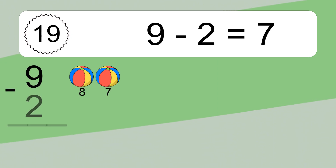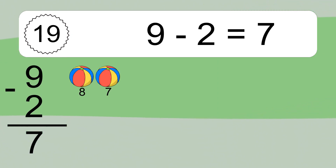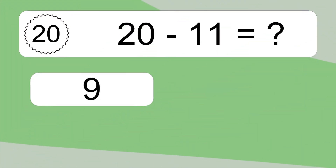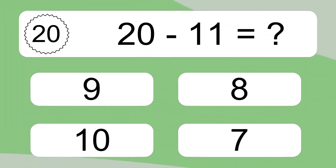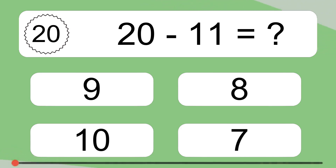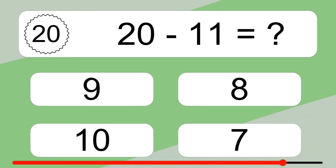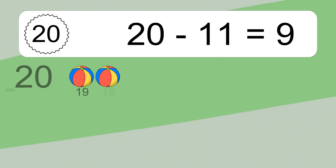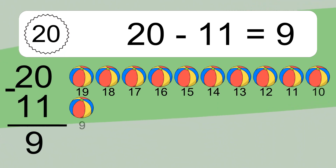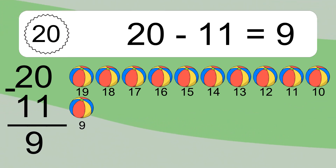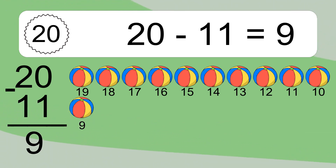20 minus 11 equals what? 20 minus 11 equals 9. Let's count it: 19, 18, 17, 16, 15, 14, 13, 12, 11, 10, 9.